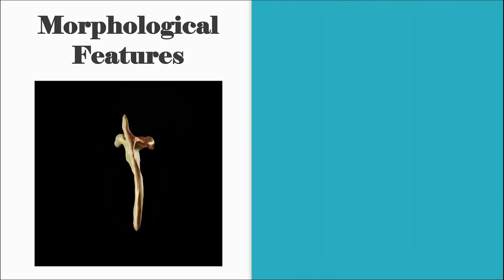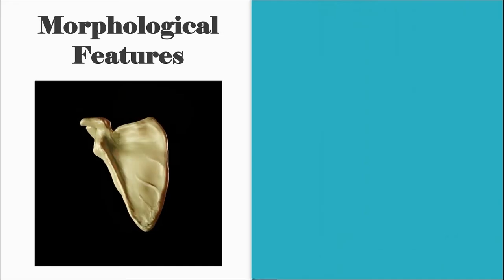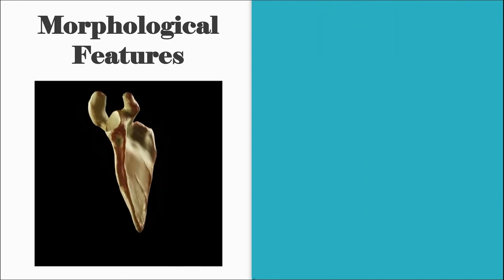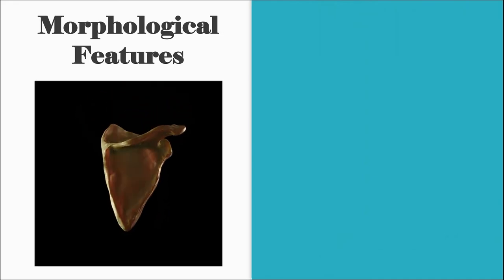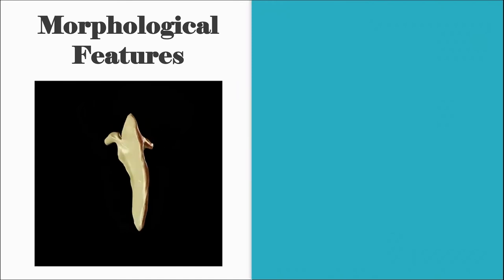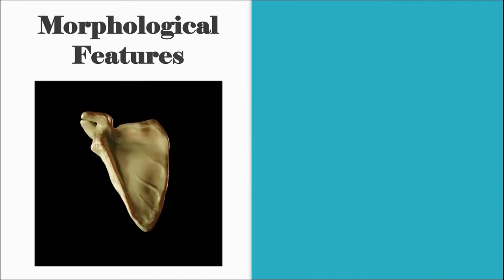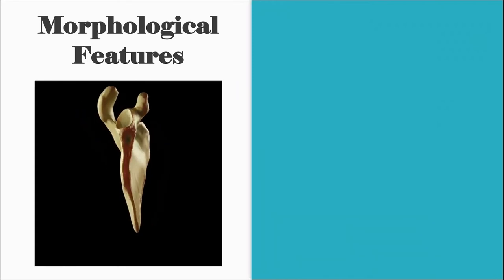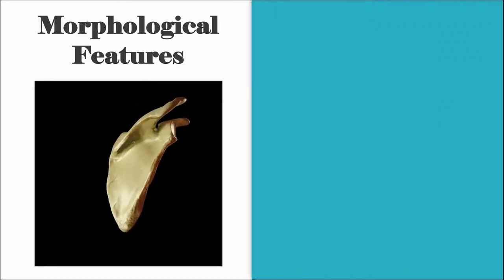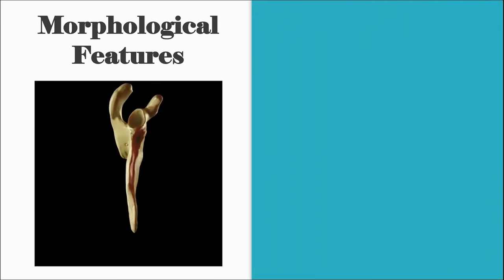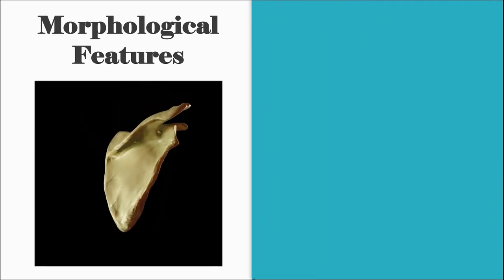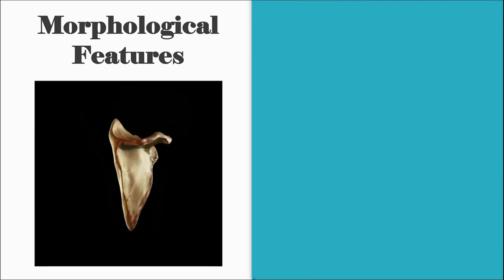It lies on the posterolateral aspect of the thoracic cage. During overhead abduction, the scapula undergoes what is known as external rotation, where the inferior angle starts jetting outwards as well as going upwards.